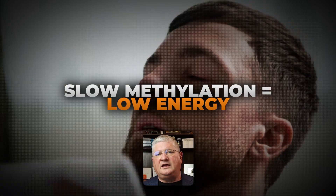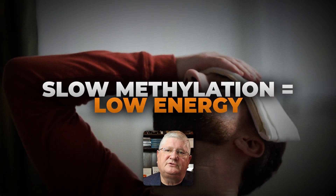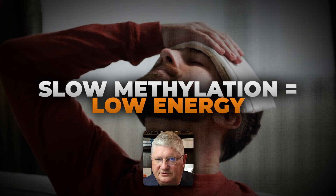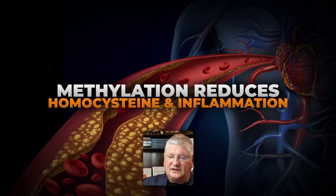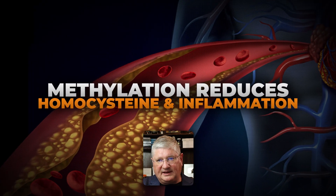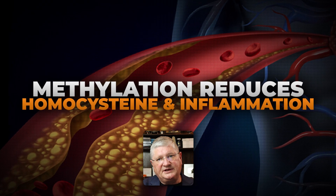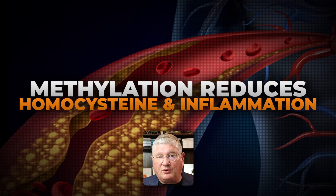Another thing people notice — which is a combination of many of these effects — is that a slow methyl cycle and slow methylation through MTHFR can cause low energy states. Low energy has many causes, but this is one of them. Additionally, methylation through activation of 5-methylfolate helps process homocysteine, which is an inflammatory mediator. If I'm processing it well, I have less homocysteine and less inflammation that could affect the brain, heart, blood vessels, and more.